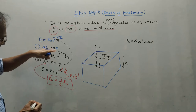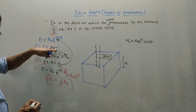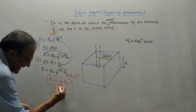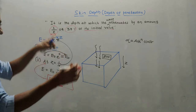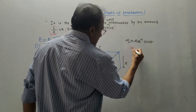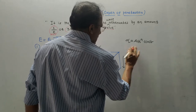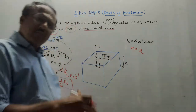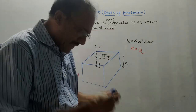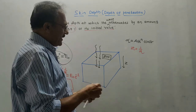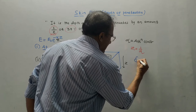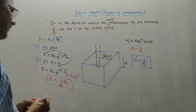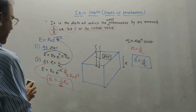e0 is the value of e at the surface, z equals 0. At distance z equals 1/alpha, we get the value 1/e times e0. This particular distance at which the wave is attenuated by an amount 1/e times the initial value is the depth of penetration. The notation for depth of penetration is delta. So the generalized equation is delta equals 1/alpha, where alpha is the attenuation constant.